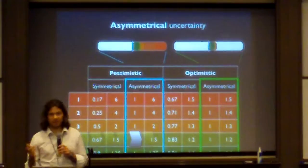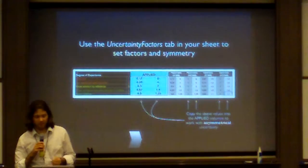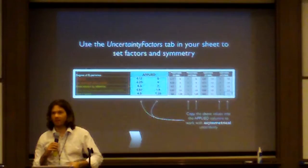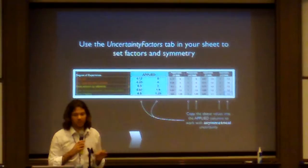So, using the estimation sheet, using the template that I described earlier, you can apply these. You can basically just click on the tab that says uncertainty factors, and then you can enter the ranges you want to use. On the right there, you have ranges that are optimistic and pessimistic, and that are symmetrical or asymmetrical. You can use the ones that work best for you.